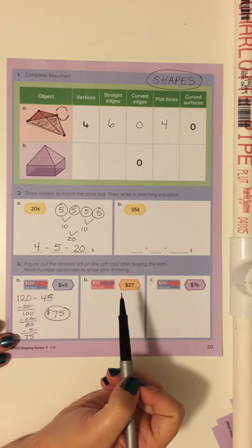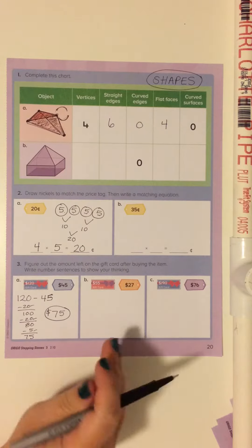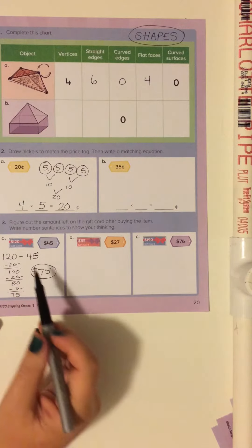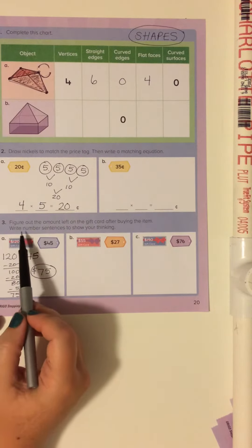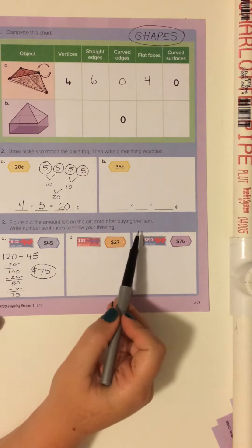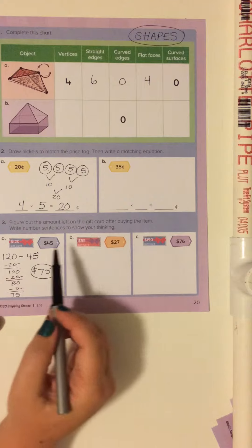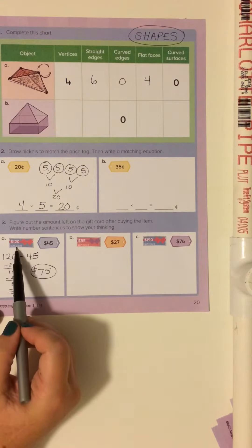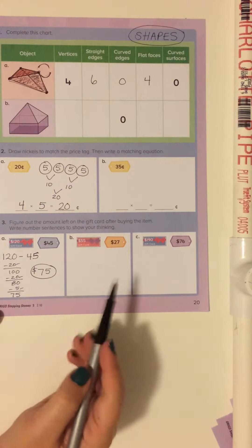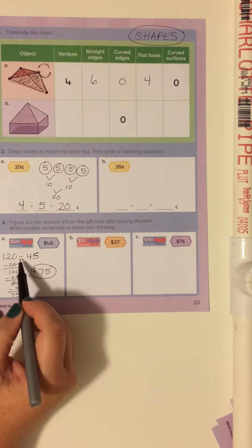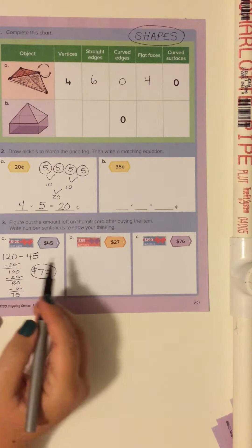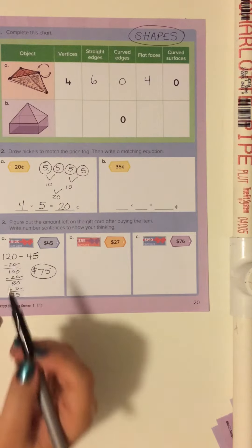Here then for number three, it's figure out the amount left on the gift card after buying the item. Write number sentences to show your thinking. So I have a 120 dollar gift card and I spent 45, so I'm solving the equation 120 minus 45.